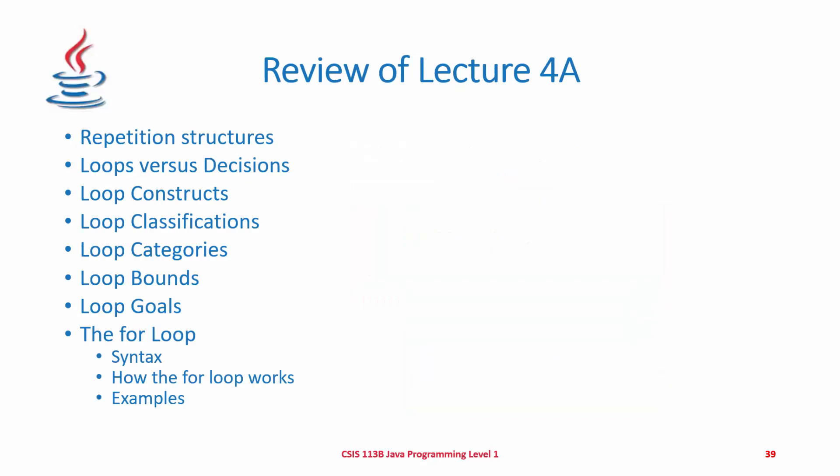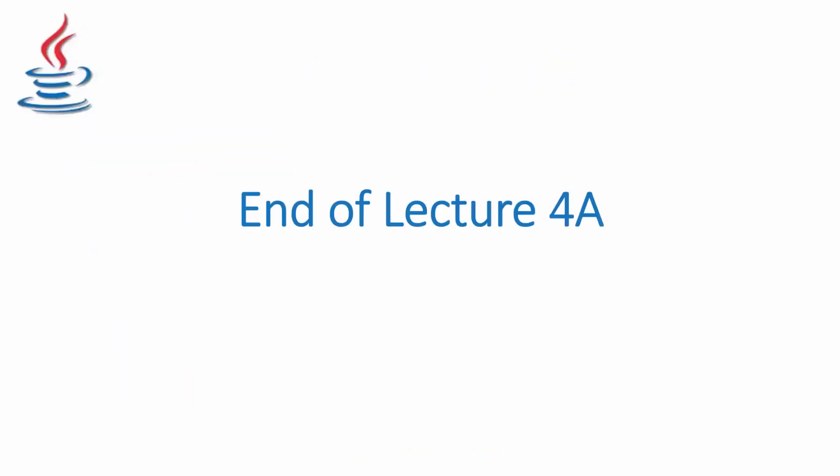To review Lecture 4A: we looked at repetition structures and discussed the difference between loops and decisions. We covered loop constructs, loop classifications, and categories. We focused on loop bounds and loop goals to ensure you configure your loops correctly so they exit properly and don't run forever. Then we examined the for loop — its syntax, how it works, and various examples of using the for loop. That is the end of Lecture 4A. Till next time — happy coding.